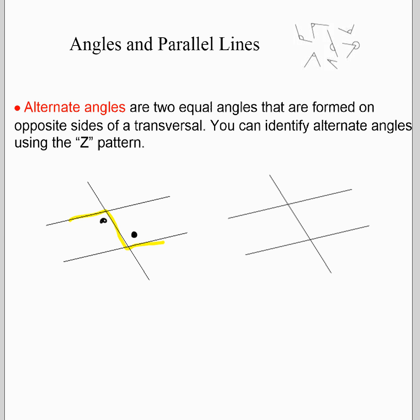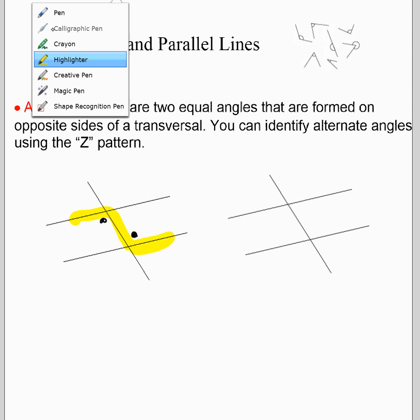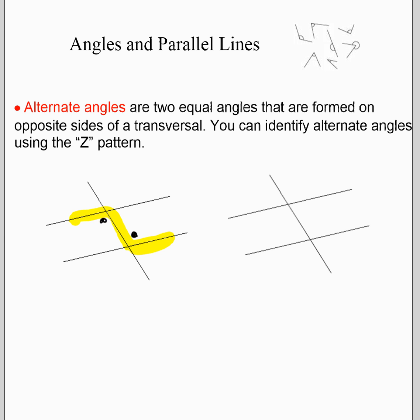One there and one there. We call alternate angles, we can find them using this thing that we call the Z pattern. Notice how that forms the letter Z. Again, often your question is going to have arrows to help you see that they are parallel lines. So again, if you had arrows here, another pair of alternate angles would be a backwards Z right there.